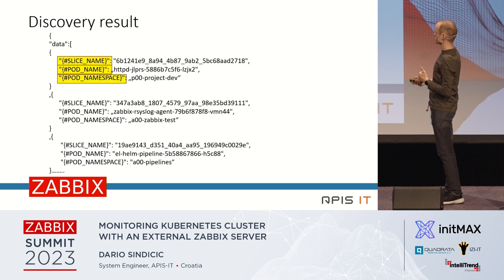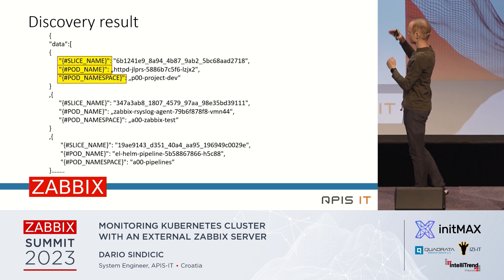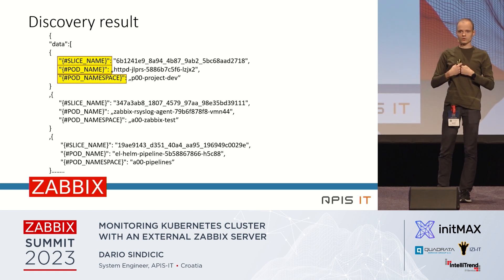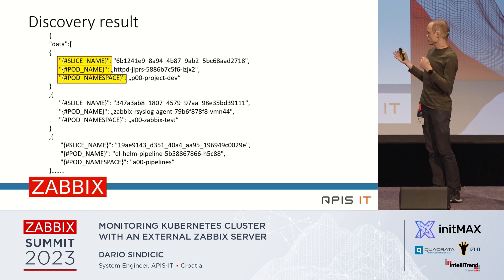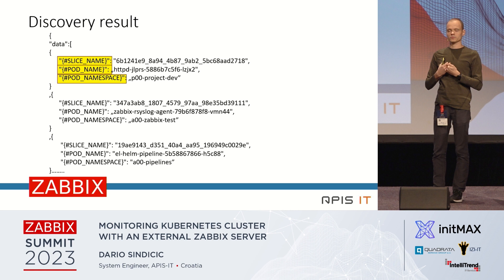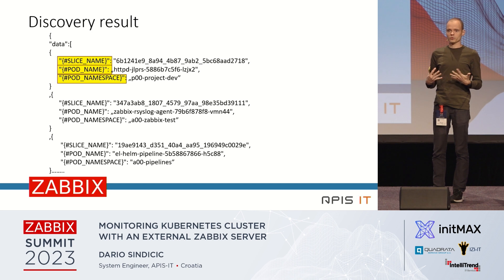The discovery results look like this: we have a slice name, a pod name, and a pod namespace. The slice name is used for collecting all useful monitoring data. The pod name and pod namespace are important when raising a trigger and sending emails to real-world people.